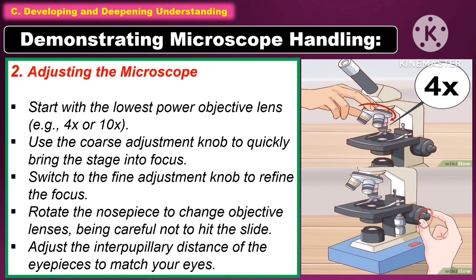Another way of demonstrating microscope handling is by adjusting the microscope. Start with the lowest power objective lens, for example 4x or 10x. Use the coarse adjustment knob to quickly bring the stage into focus, then switch to the fine adjustment knob to refine the focus. Rotate the nosepiece to change objective lenses, being careful not to hit the slide. Adjust the interpupillary distance of the eyepieces to match your eyes.